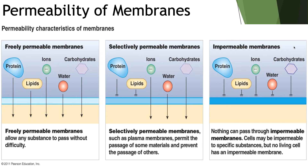There are three general categories of membrane permeability. Freely permeable membranes allow any substance to cross. Selectively permeable membranes, found in most cells in your body, only allow a few things to cross — usually based on size and charge. Impermeable membranes won't allow anything to cross.